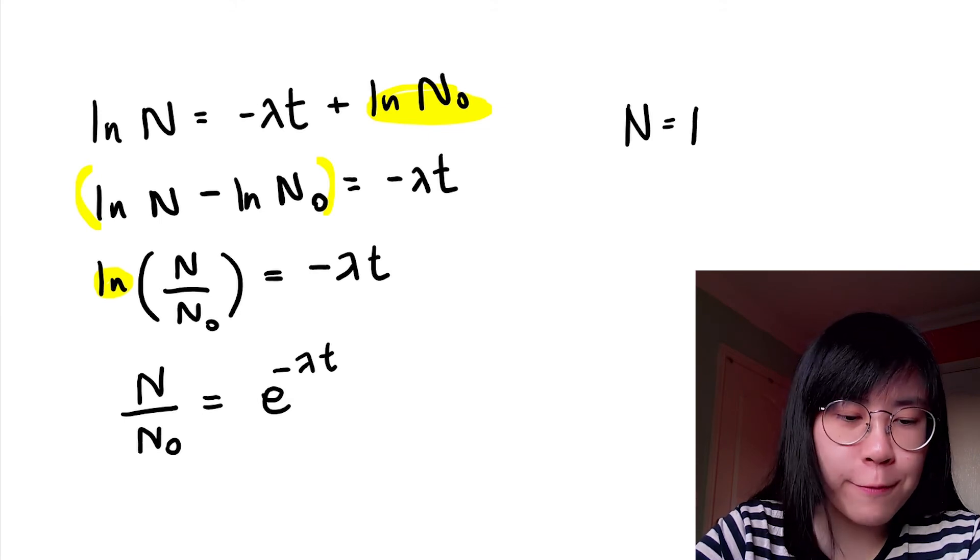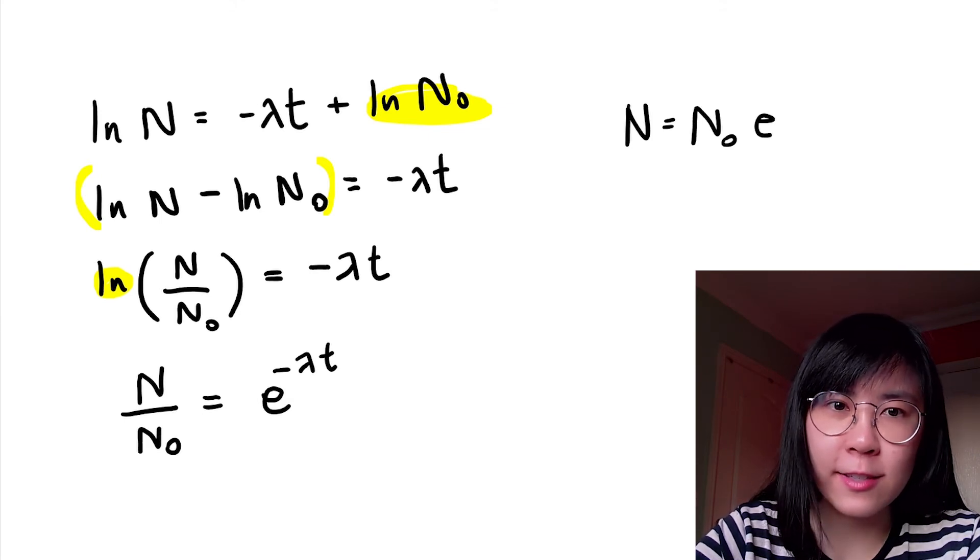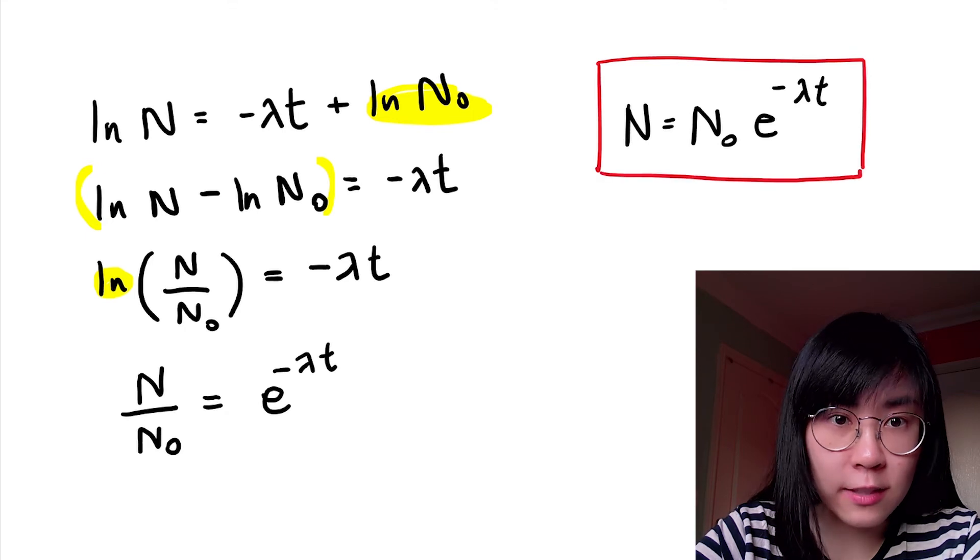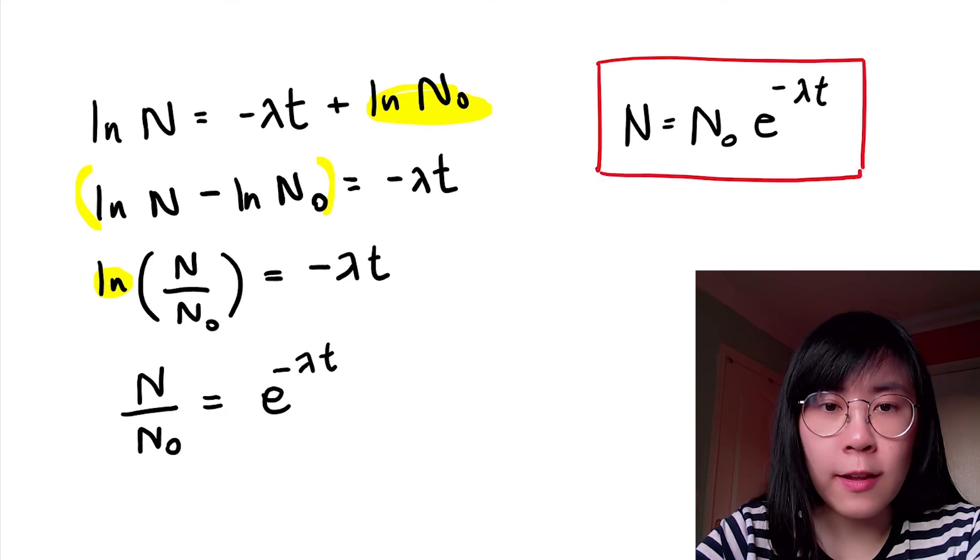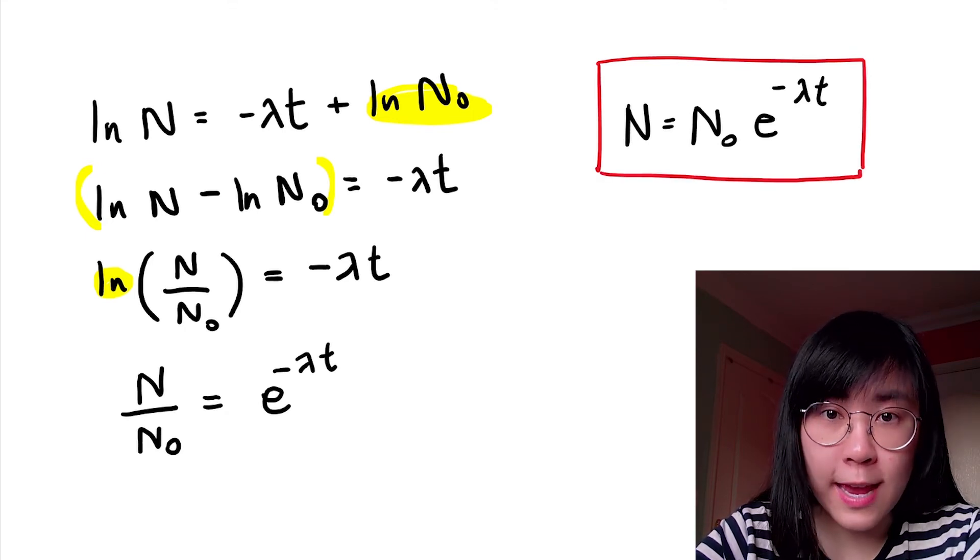So here we finally arrive at N is N sub zero e to the negative decay constant times time. This is the exponential decay equation.